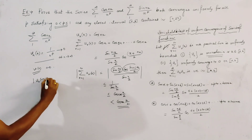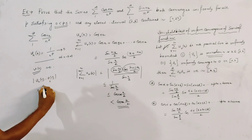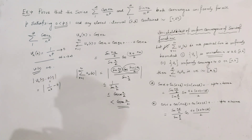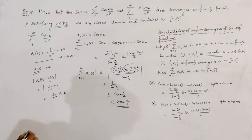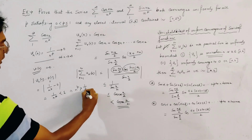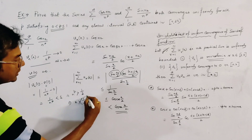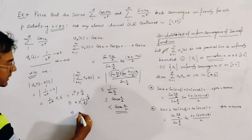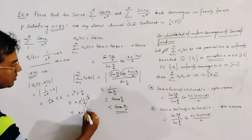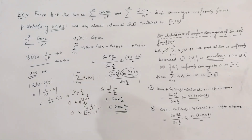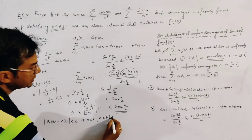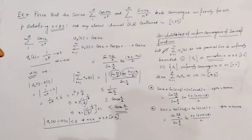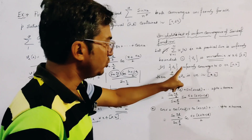Now, the modulus of v_n(x) minus V(x) equals the modulus of 1/n^p minus 0, which equals 1/n^p. If this is to be less than epsilon, then n^p must be greater than 1/epsilon, that is n greater than (1/epsilon)^(1/p). We let K be a positive integer such that K = floor((1/epsilon)^(1/p)) + 1. Then |v_n(x) - V(x)| < epsilon for all n ≥ K and for all x in [a,b]. This shows that v_n uniformly converges to 0, satisfying condition 3 of the Dirichlet test.